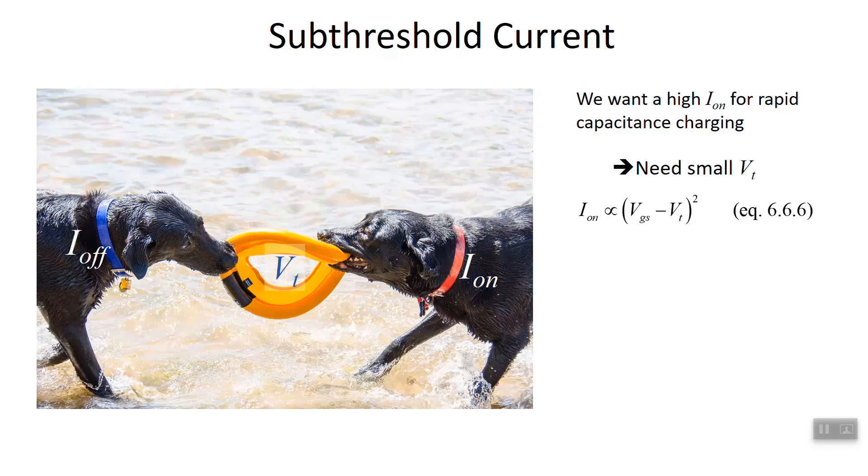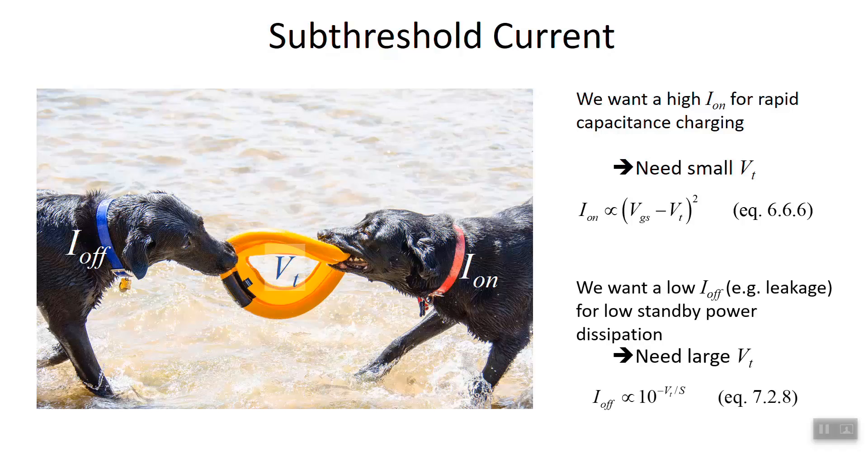Caught in between these competing interests is the threshold voltage. On and off currents place a different demand on what the threshold voltage needs to be. We want a high on current in order to charge all the capacitances, and that requires a small threshold voltage. And we want a low off current in order to have low standby power so we're not dissipating during that operation.